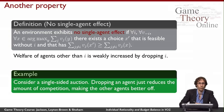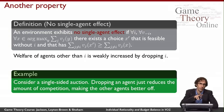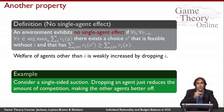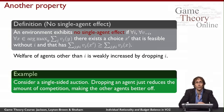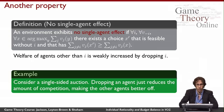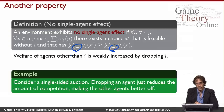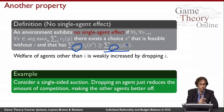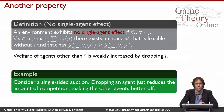Consider a single-sided auction where I have one good for sale. If I drop an agent, either that agent wasn't winning before — in which case the social welfare maximizing outcome remains the same and nothing changes — or that agent was winning. In the latter case I pick a different winner once that agent is dropped. The overall social welfare may fall, but considering only agents other than I, they're all happier when I has been dropped because one of them now gets to win. So the no single agent effect is actually a pretty natural property.